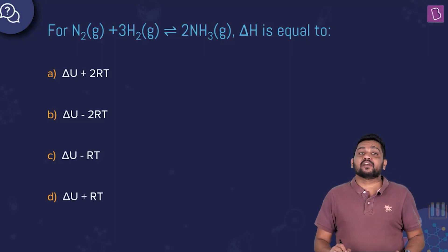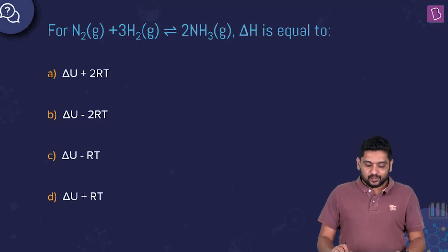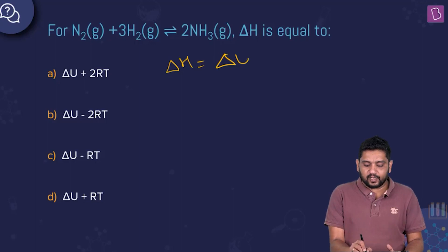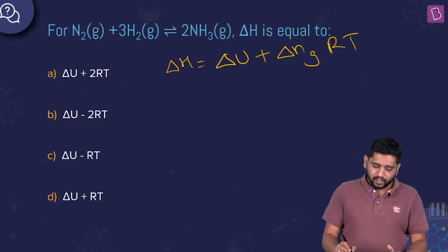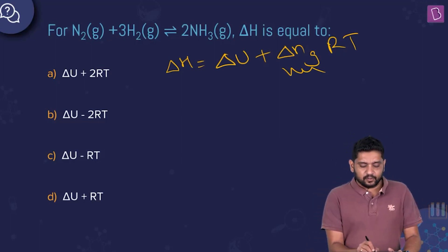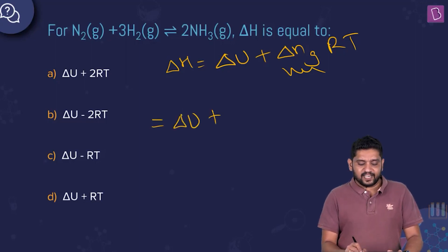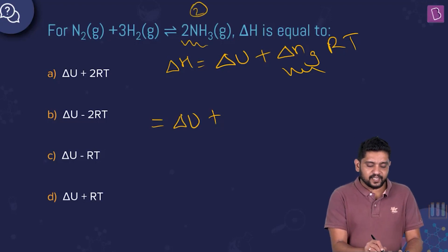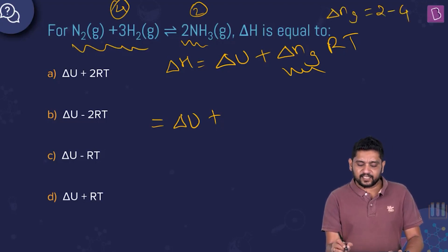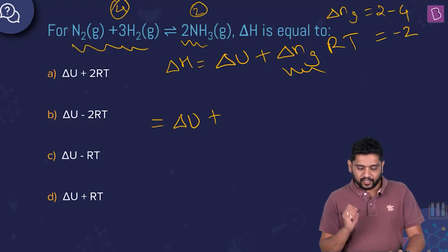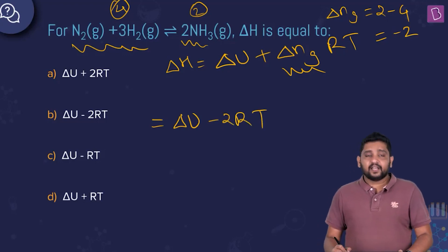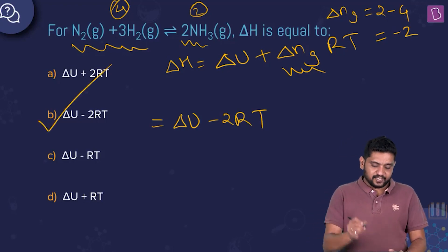For the reaction N2 + 3H2 → 2NH3, we need the delta H and delta U relation: ΔH = ΔU + Δng·RT. Delta Ng is moles of gaseous products minus moles of gaseous reactants. Here, gaseous products = 2 moles and gaseous reactants = 1 + 3 = 4 moles, so Δng = 2 − 4 = −2. Therefore ΔH = ΔU − 2RT. The correct answer is option B.